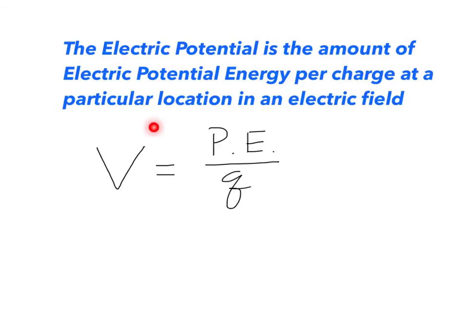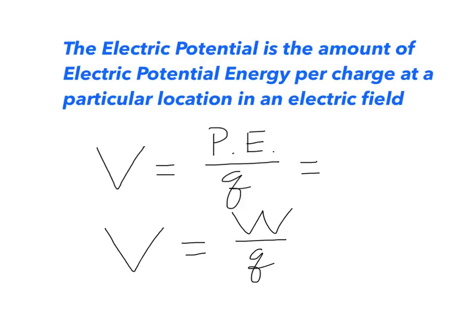Now, that is how I would write the formula, but that's not how it's written on our reference tables. How it's actually written on our reference tables is: instead of using potential energy, the electric potential is equal to the work it takes to move a charge in an electric field divided by that amount of charge. So if I was thinking of roller coasters, this potential energy would be how much energy the roller coaster car has at the top of the hill, and instead of focusing on potential energy, the reference tables focus on the work it took to give it that potential energy. So really, electric potential is about energy.